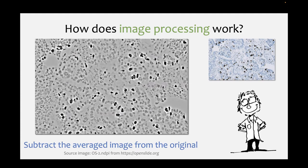We subtract the values after averaging from the ones before averaging, and this is what we get. That already starts to look like it could be useful, because it helps the nuclei kind of pop out a little bit from the background. This image also has some nice properties in that the overall average is zero - it doesn't really matter what you started with, the overall mean of this is zero, which is probably not the case with any arbitrary image. You can start to get some nice properties whenever you do these processing operations.